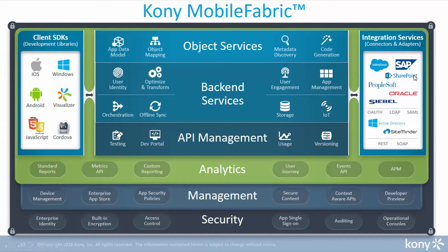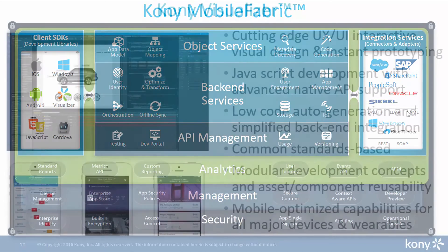Those backend services include Salesforce, SAP, SharePoint, all the way through to OAuth and Active Directory integration. The middleware layer, Mobile Fabric, really provides the capability to transform data from a number of backend data sources and synchronize that data really effectively onto the device.